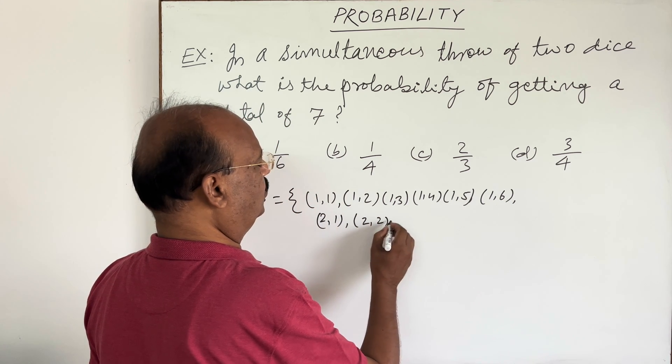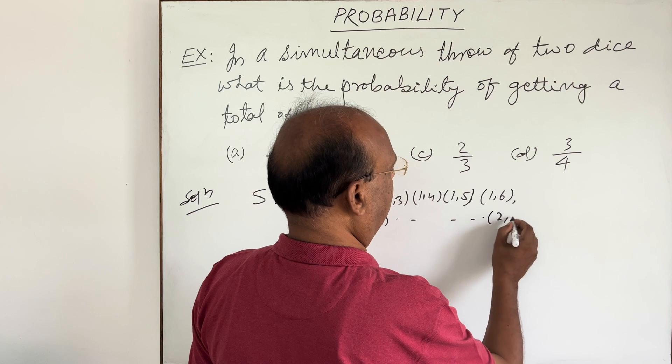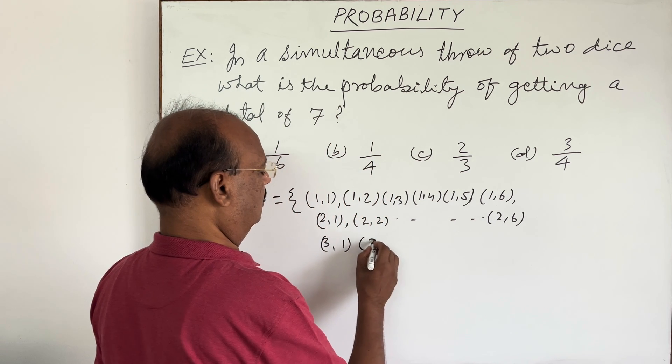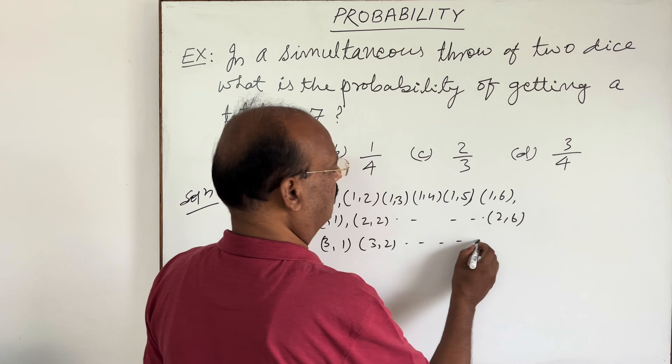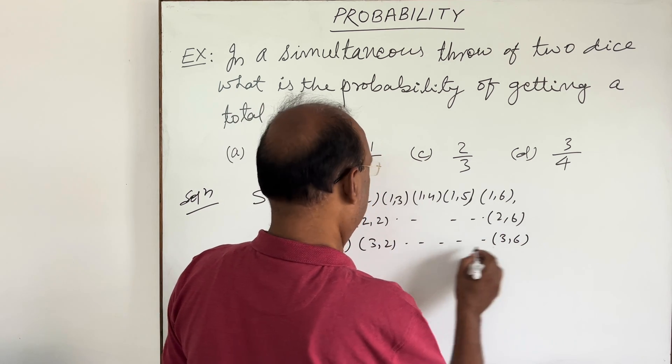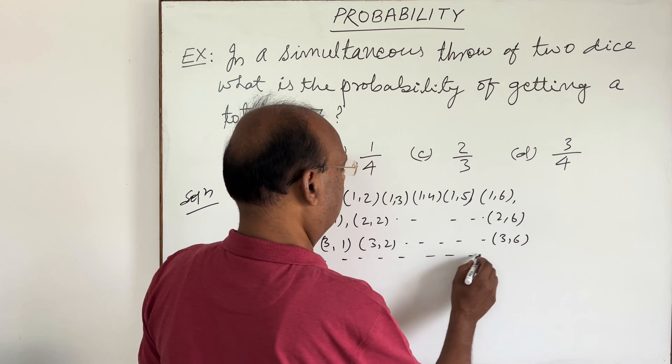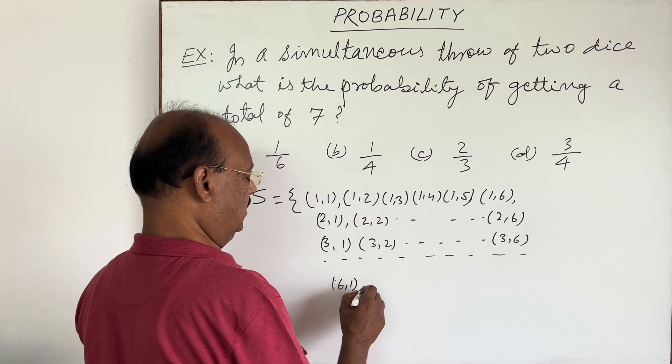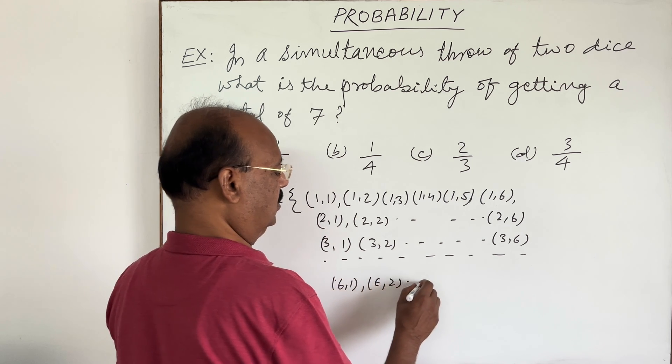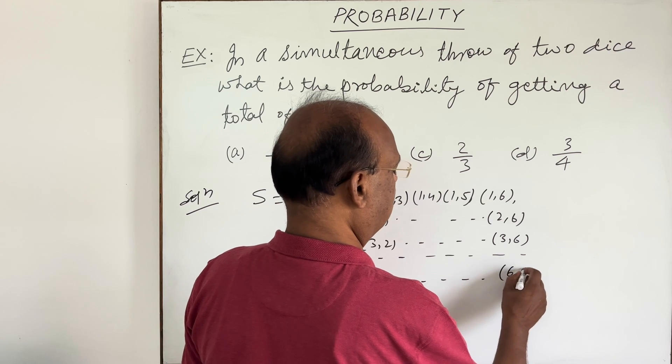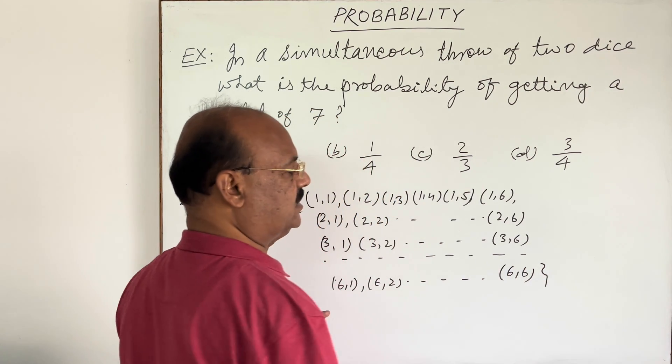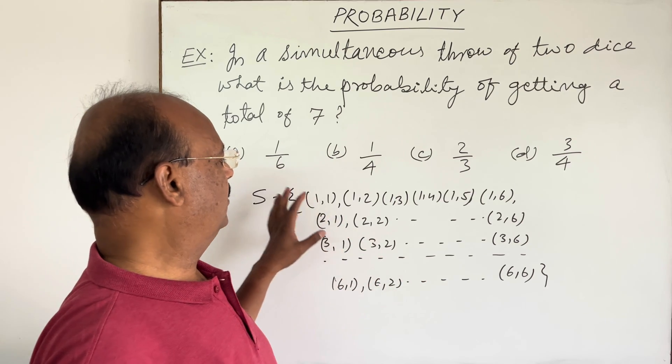Then (3,1), (3,2) up to (3,6). Similarly we will start with 4, 5, 6. Finally (6,1), (6,2) up to (6,6).